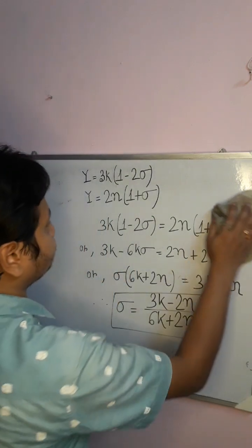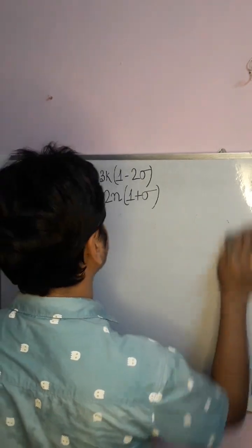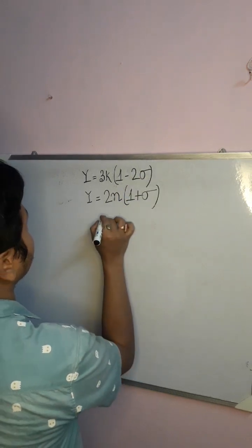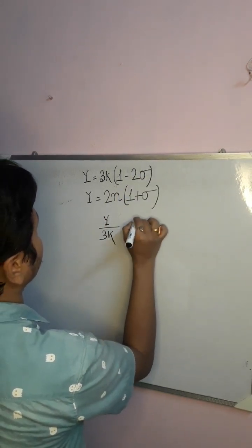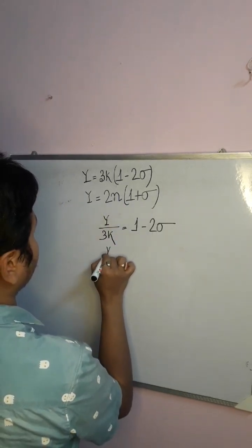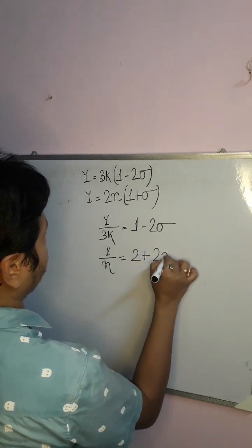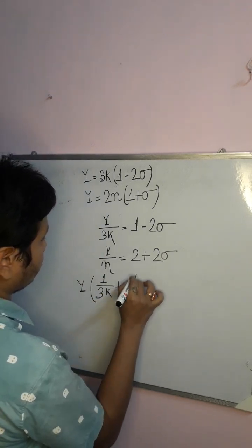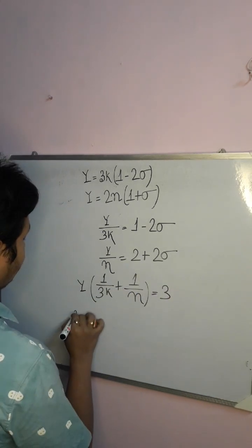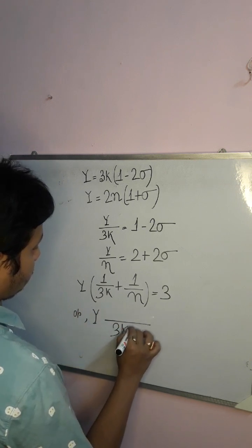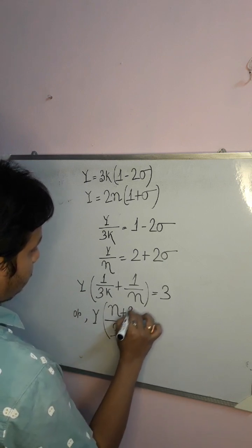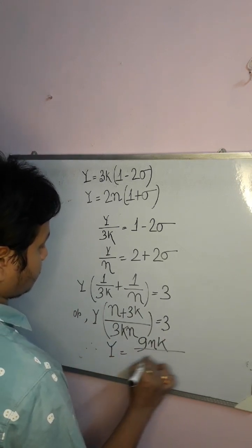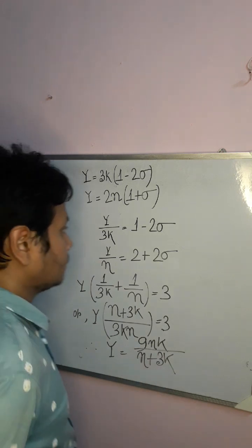By making these two equations equal we can conclude yet another relation. From the first relation we write Y/3K = 1 − 2σ, and from the second we write Y/η = 2 + 2σ. Adding these, Y times (1/3K + 1/η) = 3, so we obtain 9/Y = 1/3K + 1/η, or equivalently Y = 9Kη divided by appropriate combination. This is another important relation between Young's modulus, bulk modulus, and rigidity modulus.